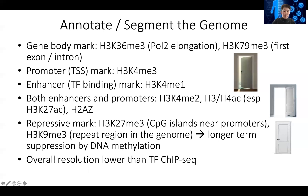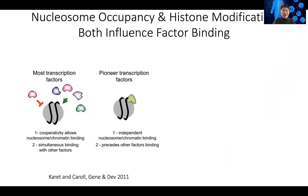Even though the overall resolution of histone mark ChIP-seq is slightly lower than TF ChIP-seq, we can already use the marks to tell us a lot about what is happening in the genome — which regions are interesting — and use it to understand gene regulation. Nucleosomes and DNA wrapped around the nucleosome prevent transcription factors from binding, with two exceptions.